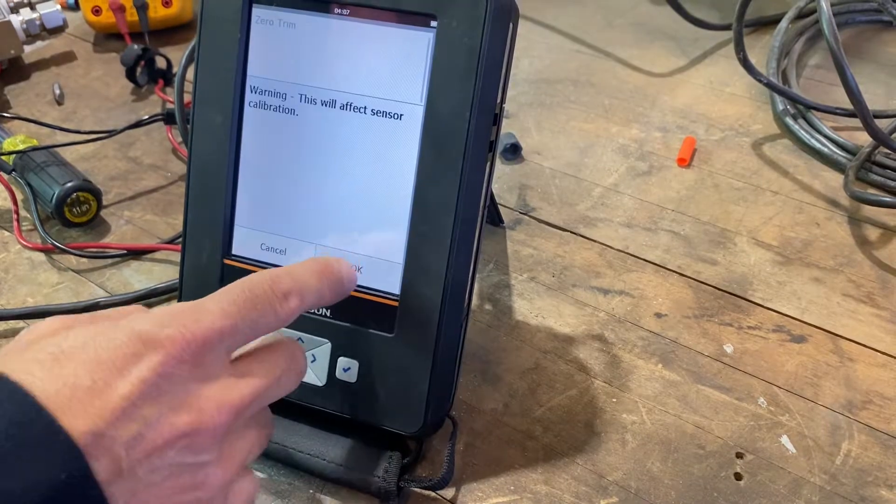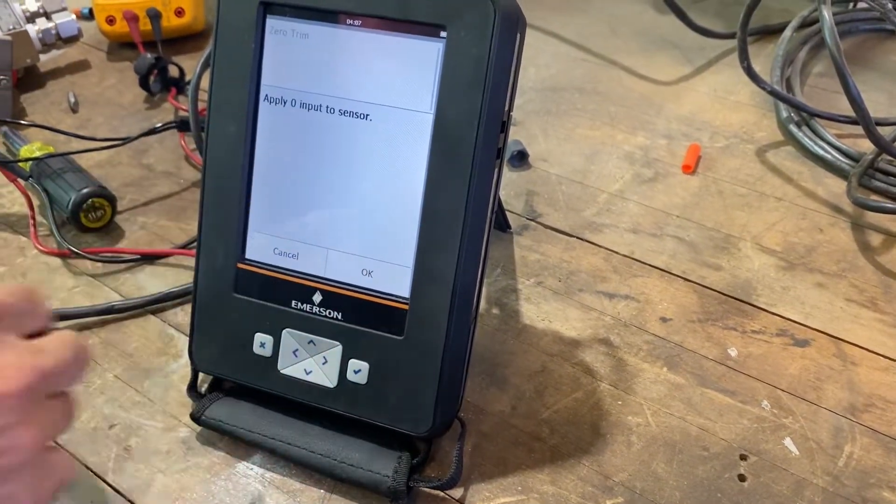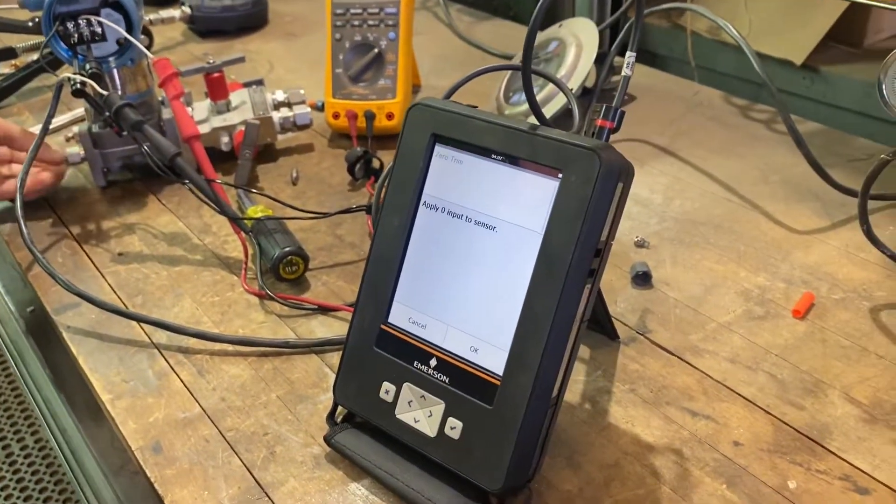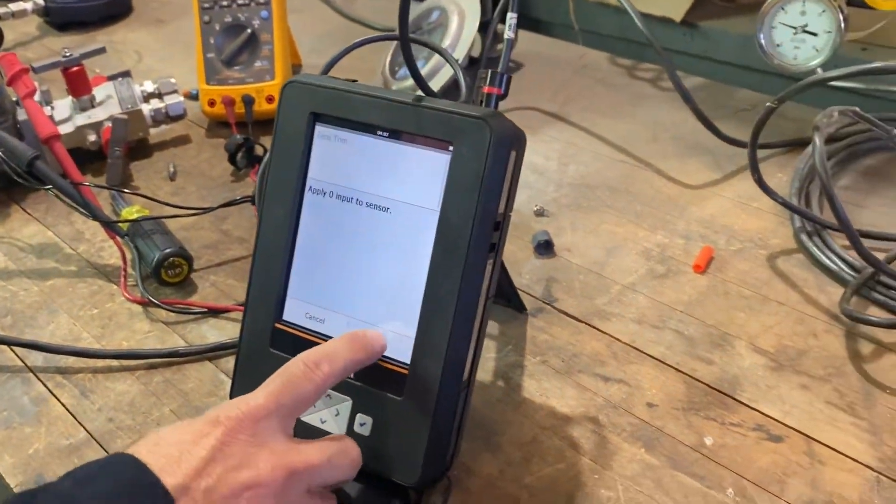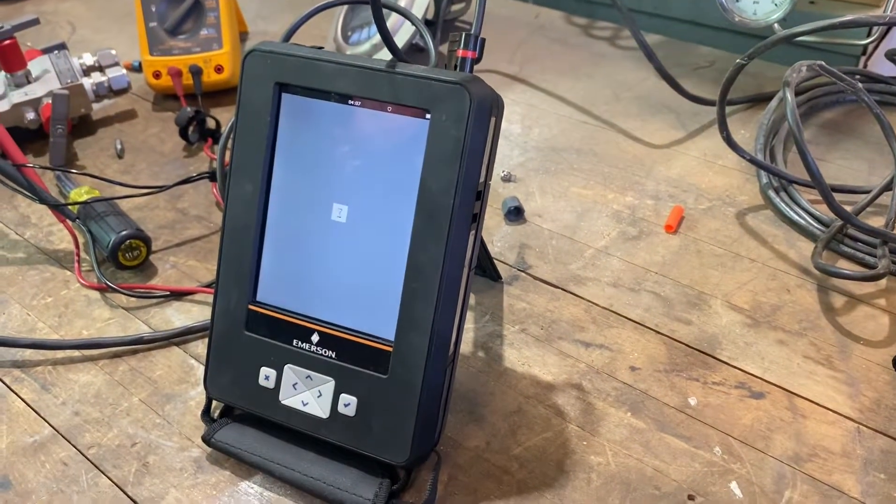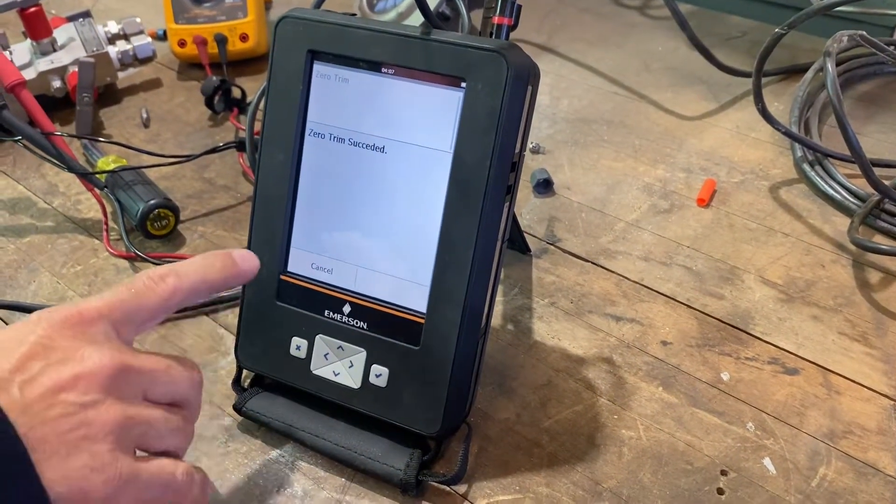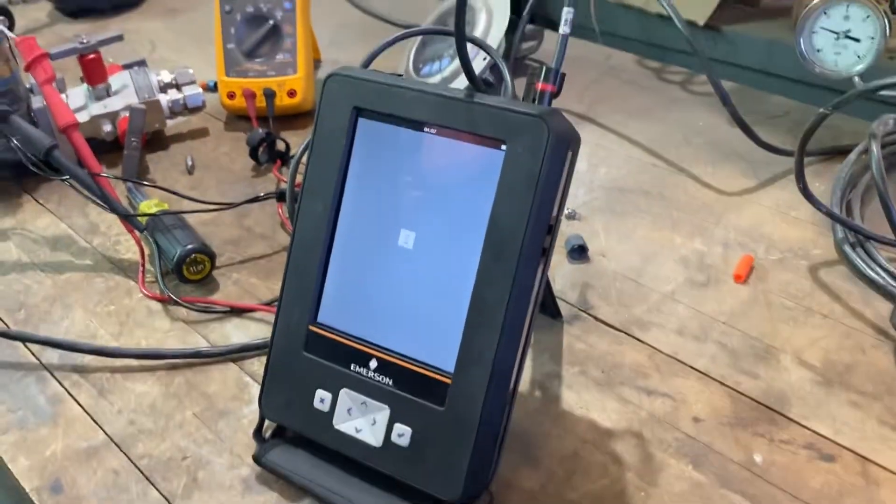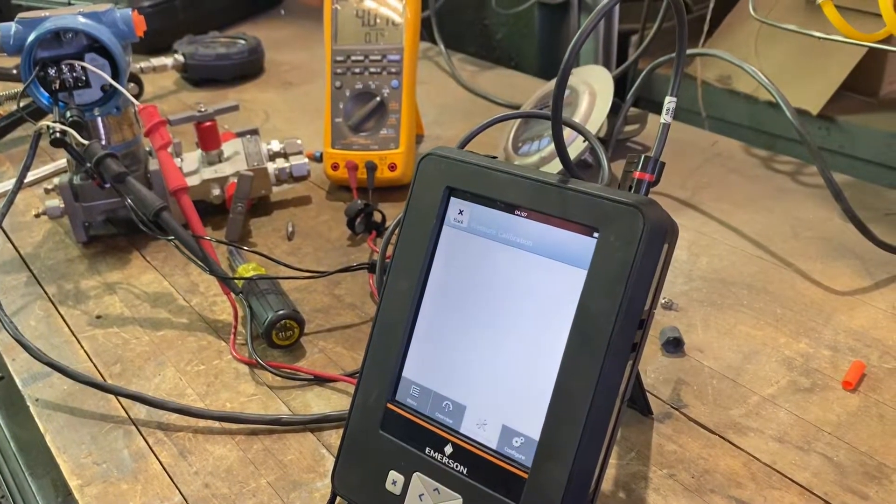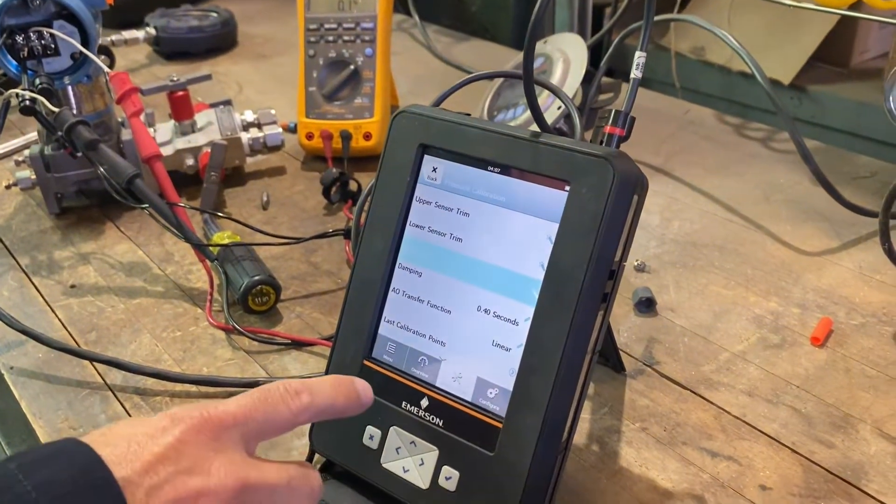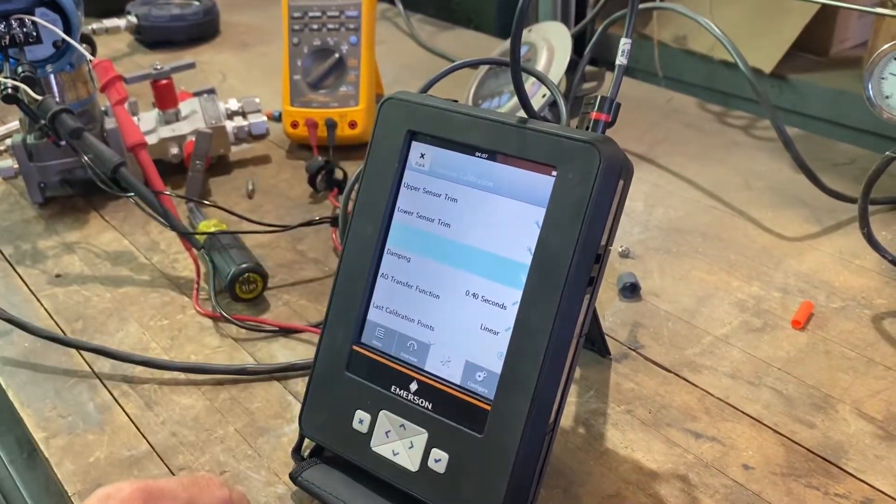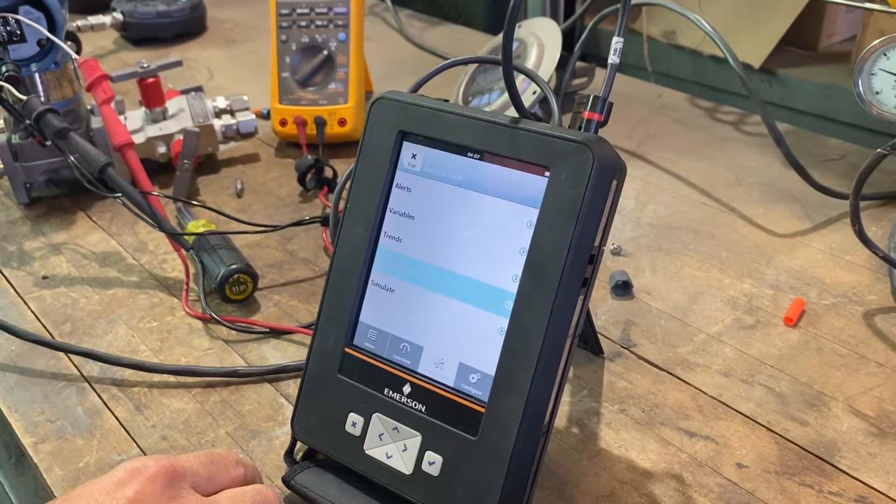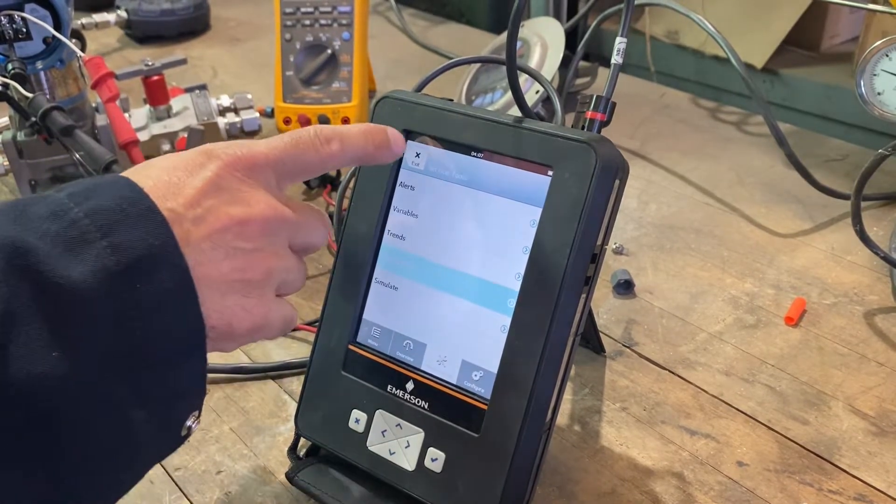Apply zero. We have it zeroed. You can't do this with any pressure on it. These plugs are open. You hit okay. Zero trim successful. Okay. And that's how you zero it.